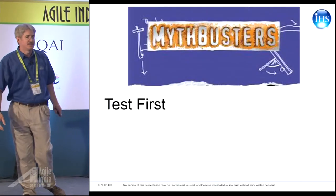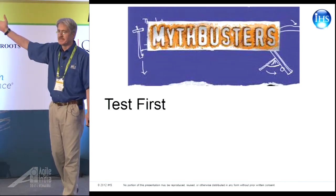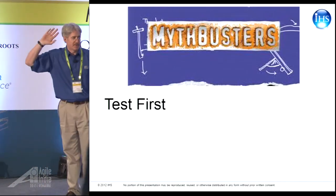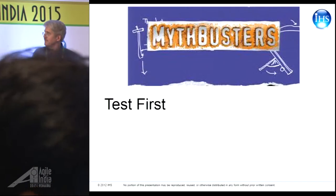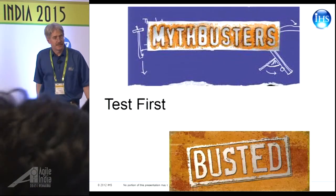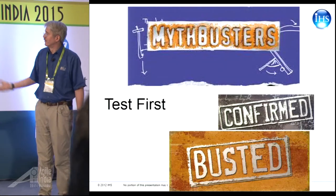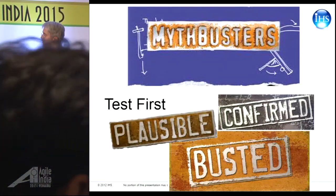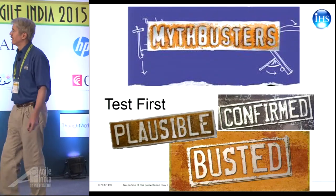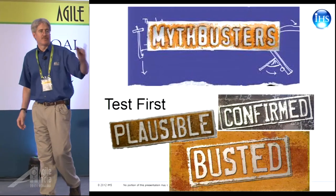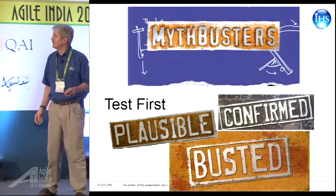As a good agilist, we're gonna start with test first. With the MythBusters, when they get together they look at three potential outcomes: either it's busted — the myth is absolutely not true — it's confirmed, or it falls in between and is considered plausible. So I'm gonna go through it. We'll start with ten myths and go through each one.